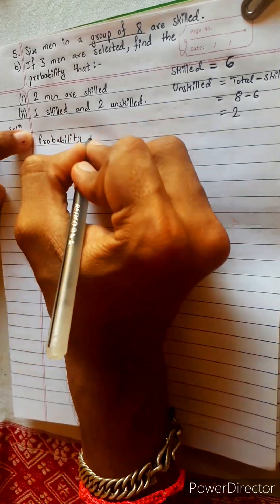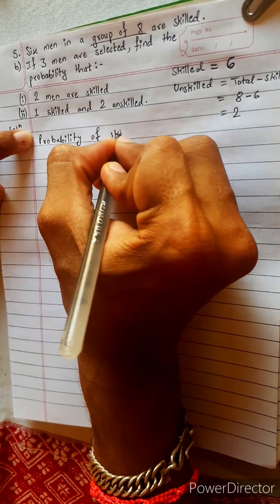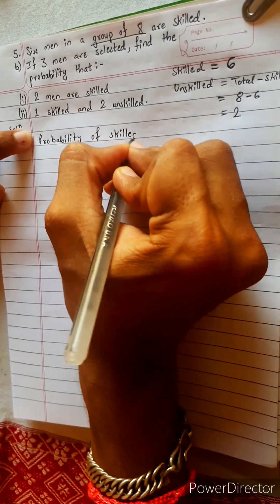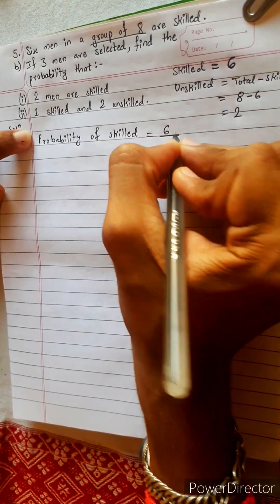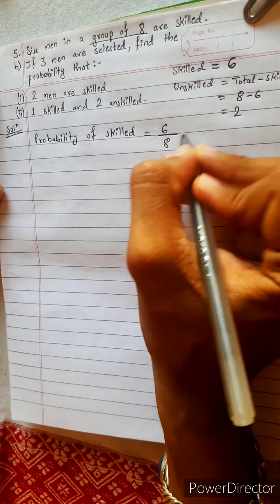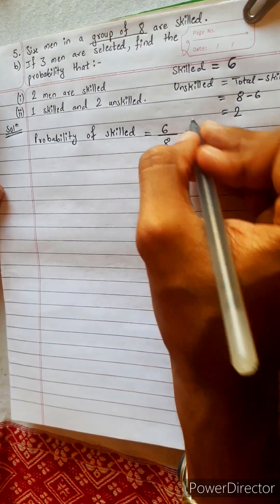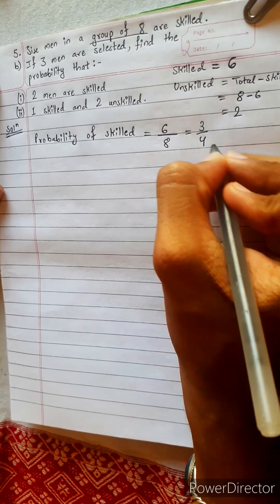Probability of skilled equals favorable cases six divided by total cases eight. This will be six by eight, which simplifies to three by four.